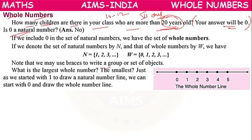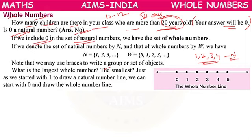Is 0 a natural number? No, because counting numbers start from 1. So 0 is not a natural number. If we include 0 in the set of natural numbers, then it will be called whole numbers — the set will be called the whole number set.